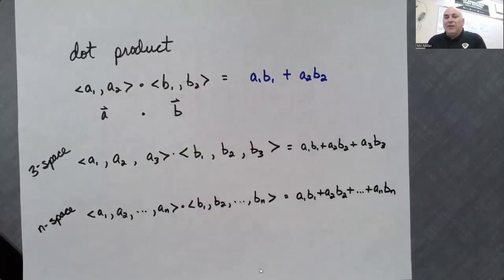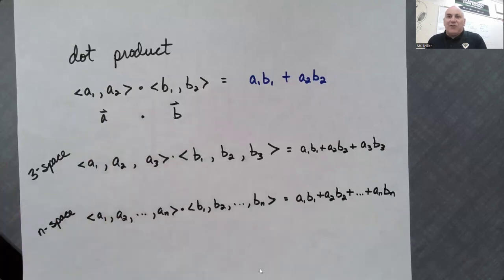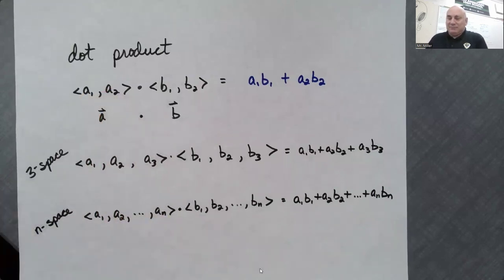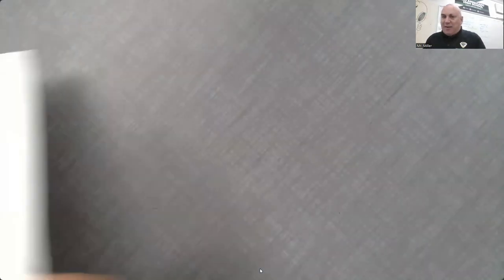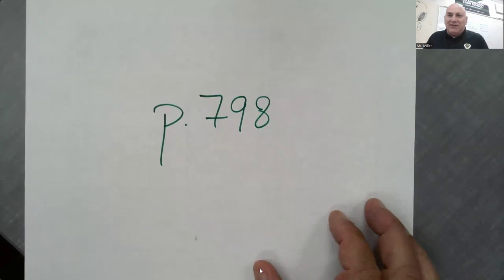Obviously, whenever you dot vectors, both vectors have to have the same number of components. Dot products have a lot of properties. You can read those at the bottom of page 798 of your textbook, and I encourage you to do so.